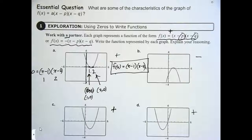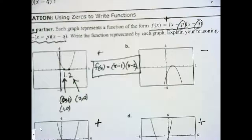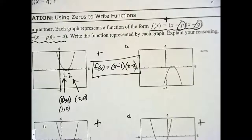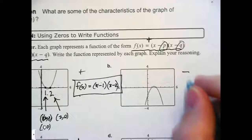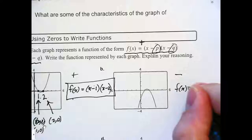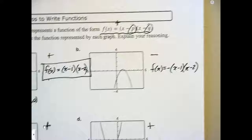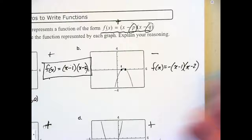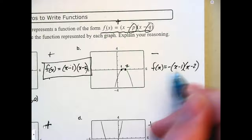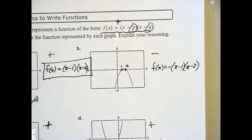I want everyone to write the equation for letter B now, please. Well done. The only thing that changes is the negative out front — it's still 1 and 2 for the intercepts. One way to think about it: whatever intercept value you have, you put the opposite sign inside the parentheses. So positive 1 gives x minus 1, and positive 2 gives x minus 2. Very well done.